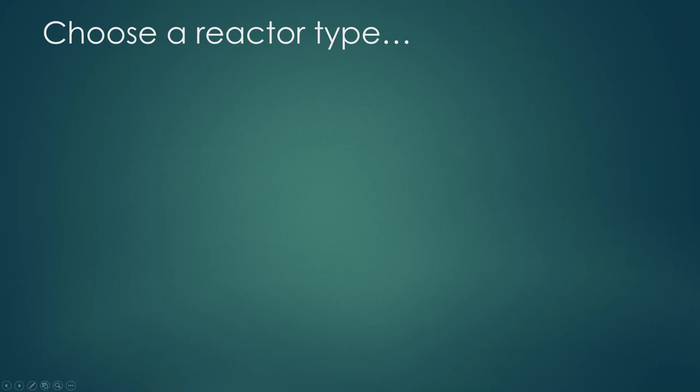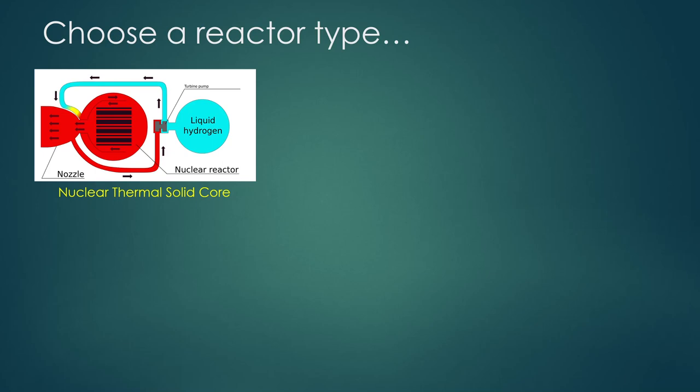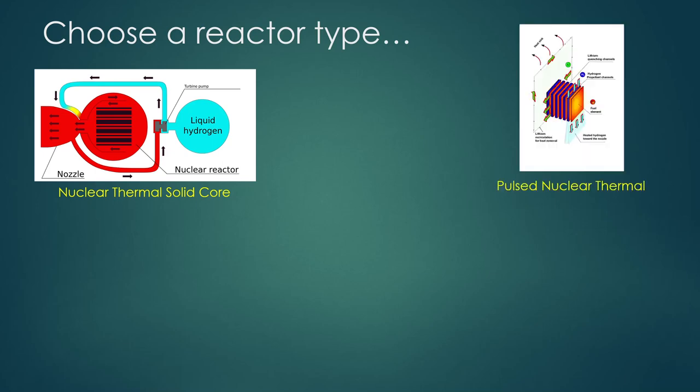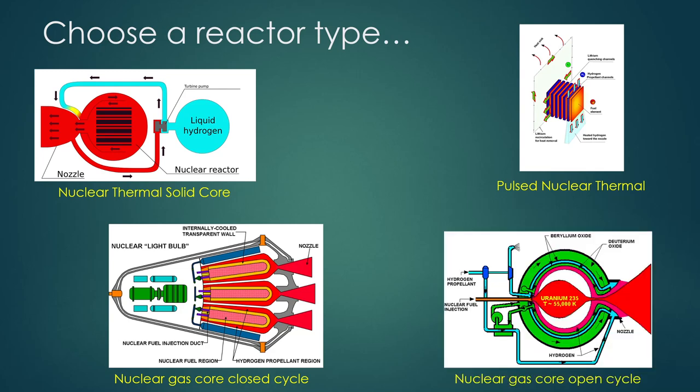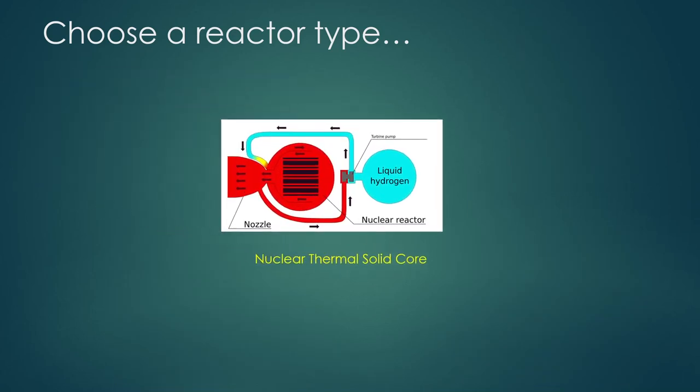Now the first step when we're building a nuclear rocket is to choose the reactor type. And there are a few different types. There's what's called a nuclear thermal solid core, a pulse nuclear thermal design, two different nuclear gas core designs (closed cycle and open cycle), and a whole bunch of different variations. For your first attempt I highly recommend that you do the nuclear thermal solid core as it's by far the easiest and by far the most well understood.